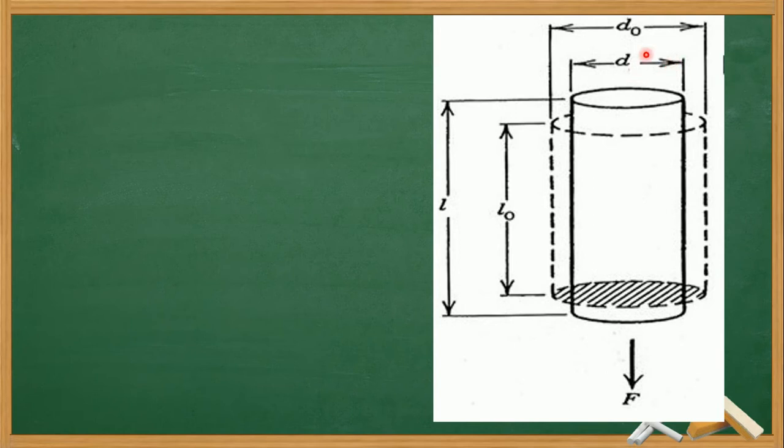When we attach a load to a wire, then its length increases and its diameter decreases. The final diameter is small d, and the increased length of wire is small L. This is a wire having original length L0 and original diameter D0. After attaching a load, two dimensions of the wire change. Length gets increased, and diameter gets decreased.